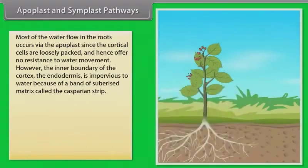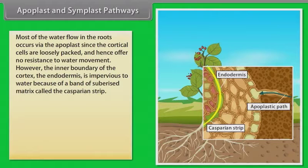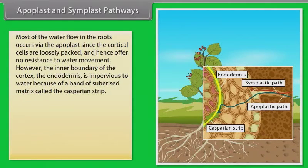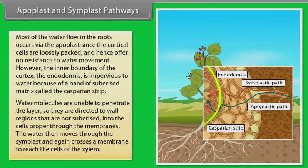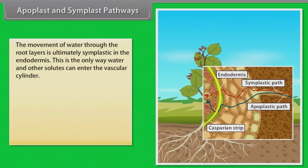Apoplast and symplast pathways. Most of the water flow in the roots occurs via the apoplast since the cortical cells are closely packed and hence offer no resistance to water movement. However, the inner boundary of the cortex, the endodermis, is impervious to water because of a band of suberized matrix called the Casparian strip. Water molecules are unable to penetrate the layer, so they are directed to wall regions that are not suberized into the cells proper through the membranes. The water then moves through the symplast and again crosses a membrane to reach the cells of the xylem. The movement of water through the root layer is ultimately symplastic in the endodermis. This is the only way water and other solutes can enter the vascular cylinder.